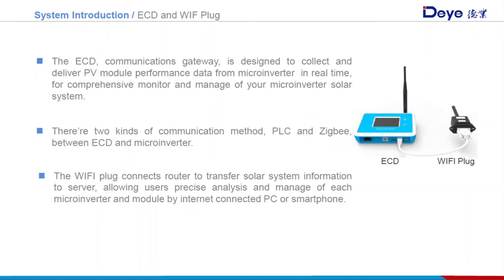The ECD is used to communicate with the microinverter via PLC or ZigBee, and sends solar station information to the platform for remote viewing and setting. It needs two connected Wi-Fi data loggers via RJ45 cable. One ECD supports a maximum of 32 microinverters connected in the solar system, which saves initial equipment investment. The Wi-Fi plug connects to a router and transfers solar system information to the server, allowing users to analyze and manage each microinverter and module by PC and smartphone.